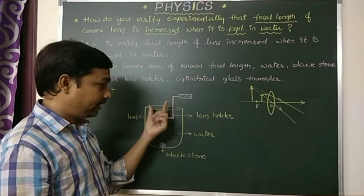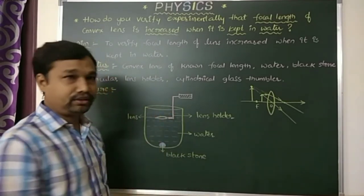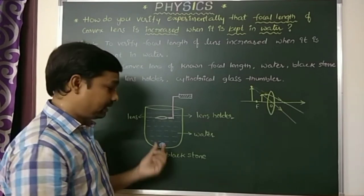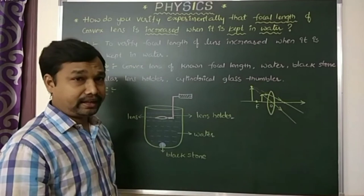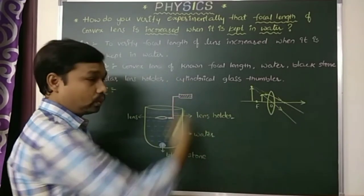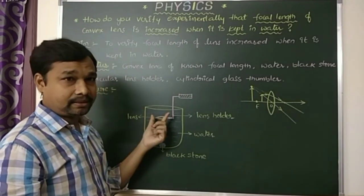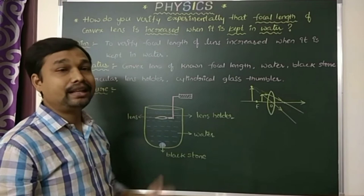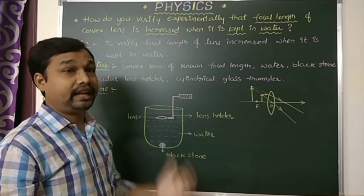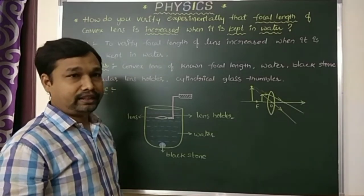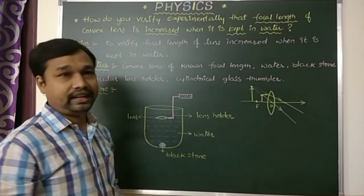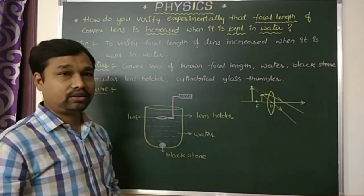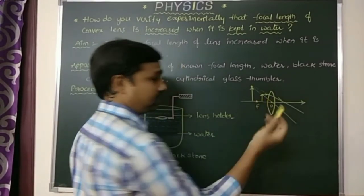Then, we take one lens holder, place the convex lens in it, and take one black stone — placing it inside the container at the bottom. After that, we take the lens holder with the lens and dip it in the water. We place the lens such that the distance between the object and the lens is equal to or less than the focal length of the lens in air, which we suppose is x centimeters.